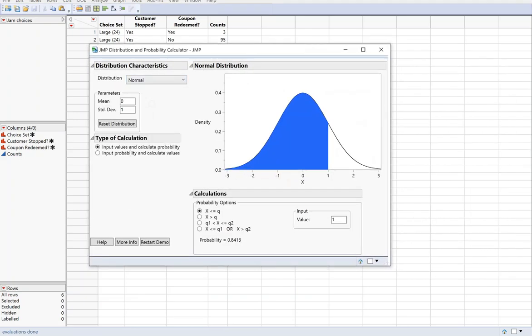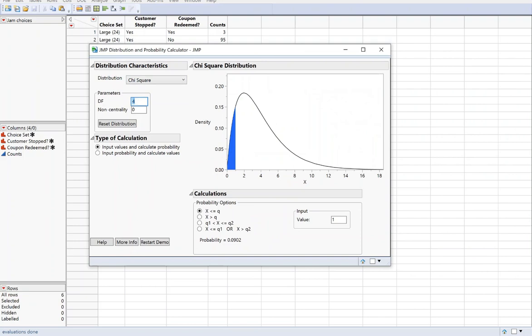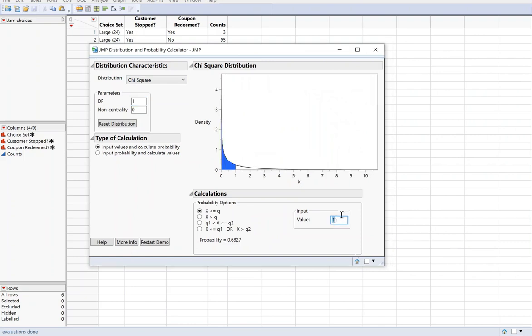I'm changing it to chi-squared, and I want one degree of freedom. I'm going to put in 12.790, that's my test statistic, and pick greater than. So this value that's given to me, that's my p-value, 0.0003. That's my p-value.